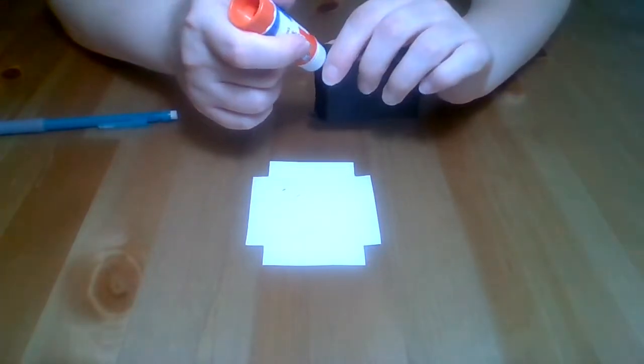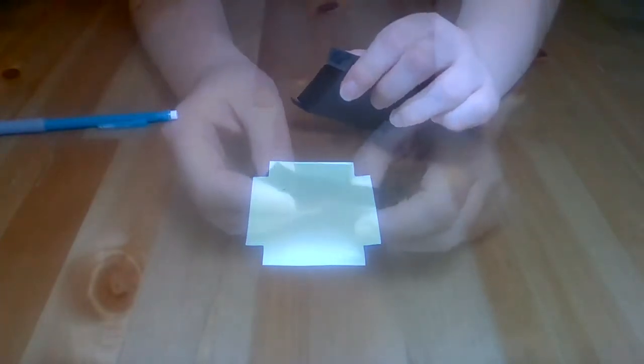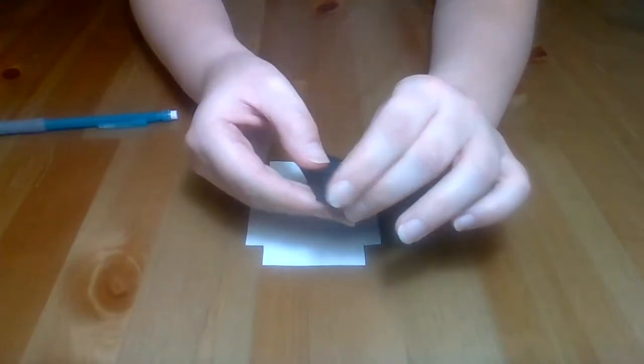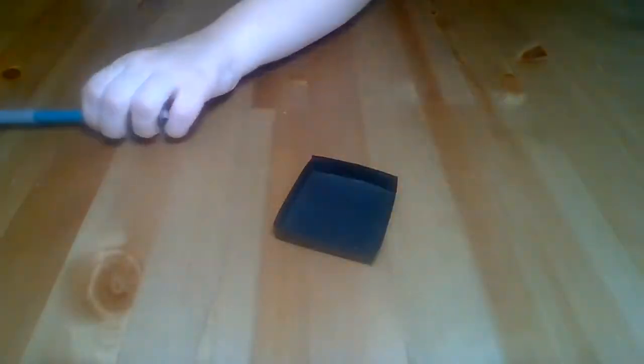The last part of our lid is to glue the tabs. Glue the tabs and press them to the back of the sides of the box. Make sure that the box lid stays stable and allow it to dry for at least 30 seconds to a minute.